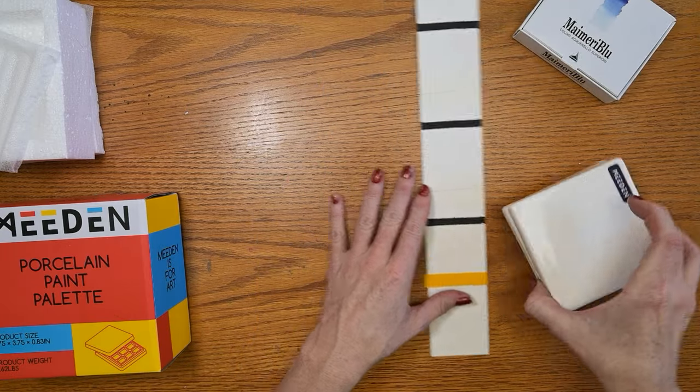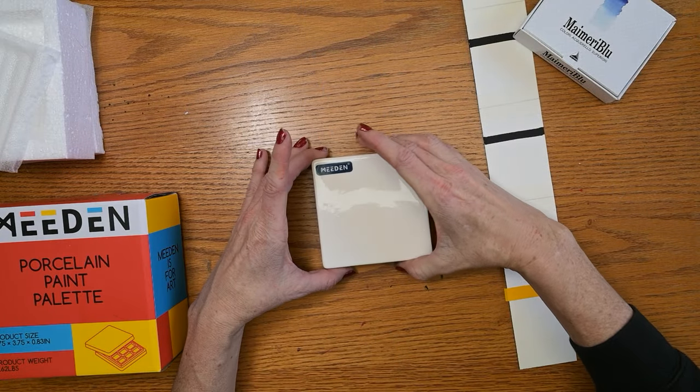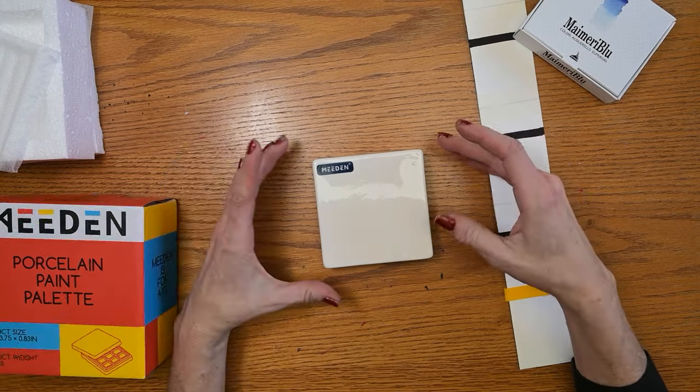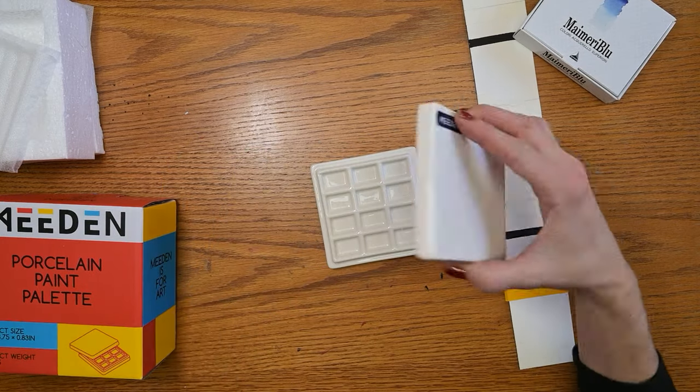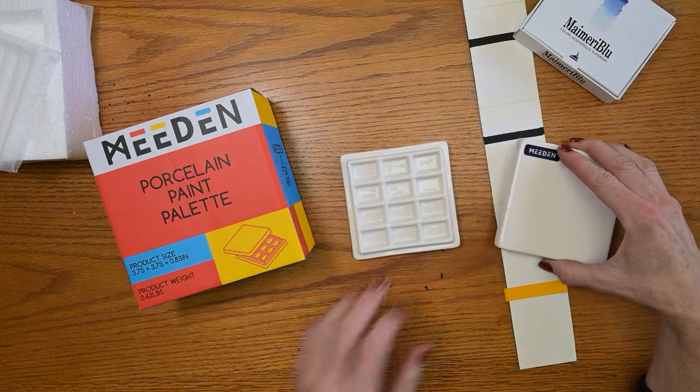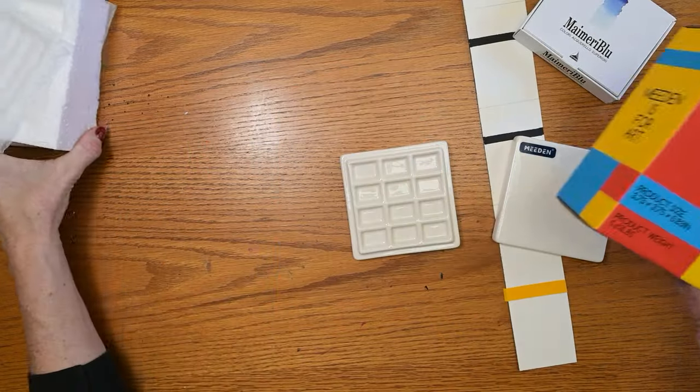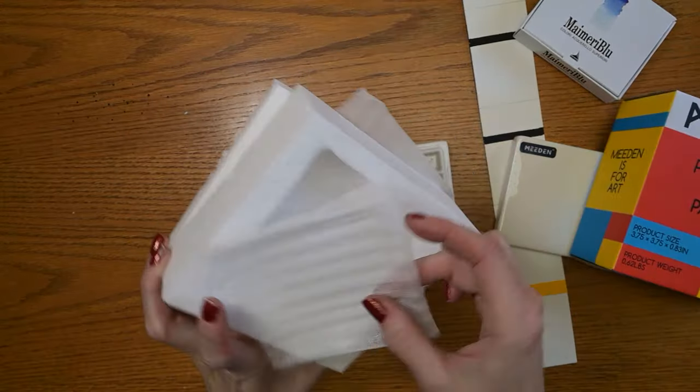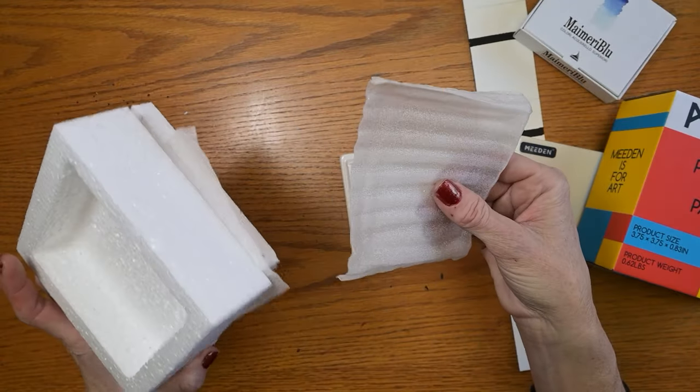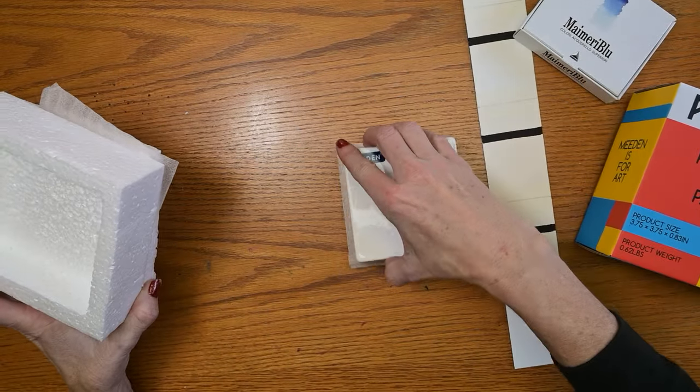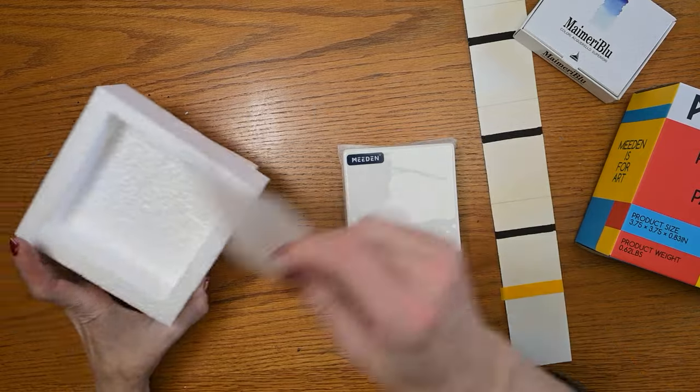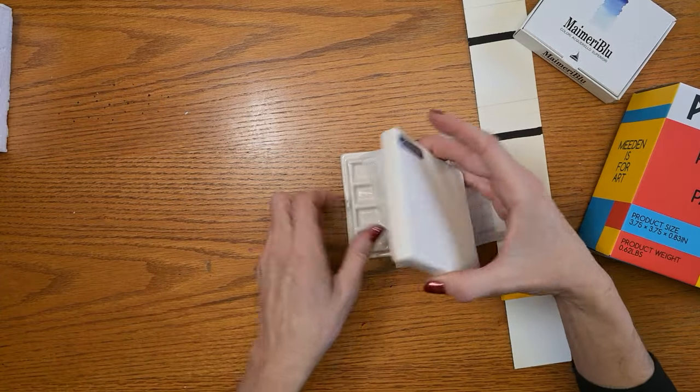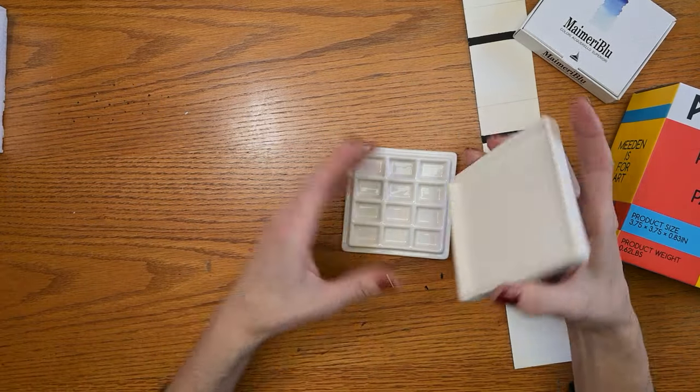I had some extra Arches paper here that we'll be using, and I thought we'd set it up in this awesome ceramic meet-in palette. It comes in this very colorful box, nicely wrapped in foam with little foam padding between the layers and on top. It's very well protected, and in fact I have two of these to give away today.